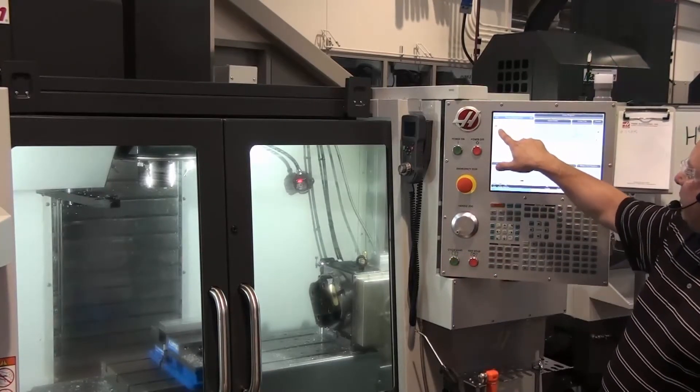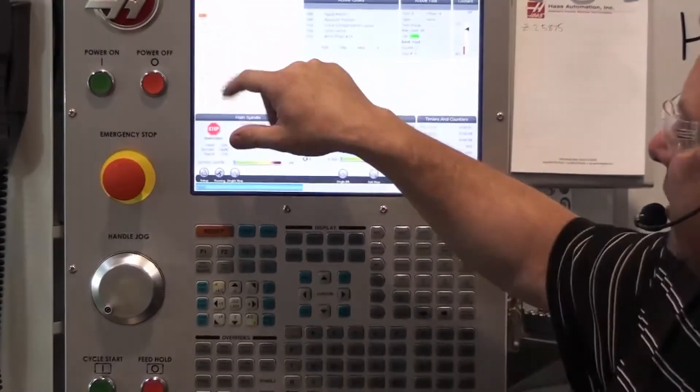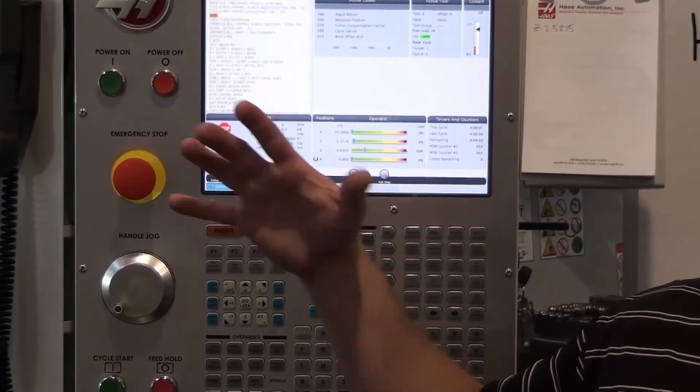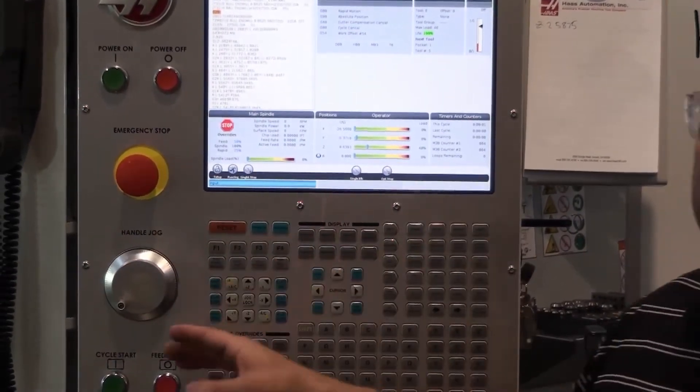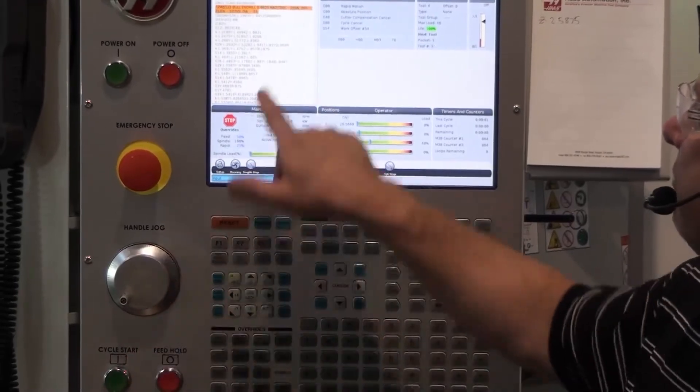So as I get to my safe block, I'm checking to make sure that my safe block is set up correctly. Make sure I'm in inch, make sure I'm in XY, make sure I'm in absolute. Make sure I grab the right tool.